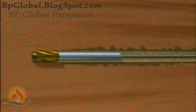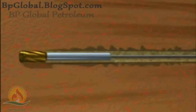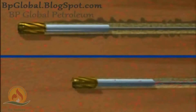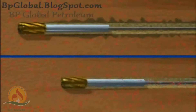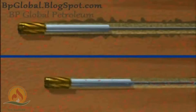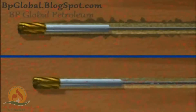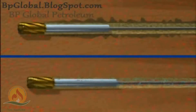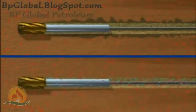Experience shows that even a short exposure to over-balanced conditions can severely impair the productivity of a well. In under-balanced drilling operations, the hydrostatic head of the drilling fluid is designed to be less than the reservoir pressure. This means there is a continuous flow of hydrocarbons into the well during the drilling process. Under these conditions, no near wellbore damage occurs and the well's ultimate production is not impaired.